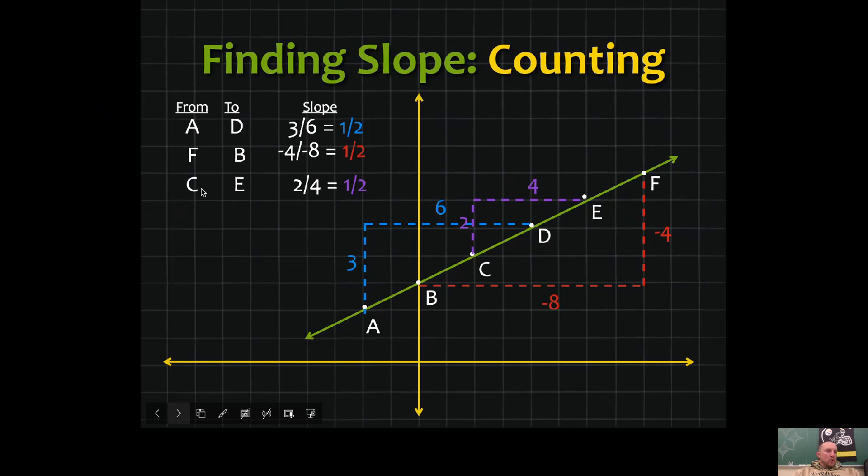Check the slope from point C to point E. We're going to go up two and four to the right. Up two, four right is 2/4—it reduces to 1/2.